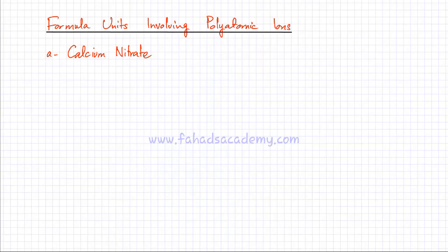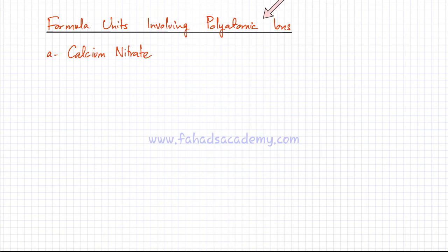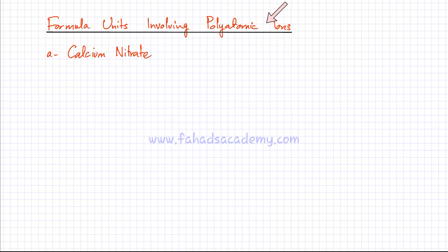In this video lecture, we're going to learn how to write formula units, but this time involving polyatomic ions. Polyatomic ions were the hydroxides, nitrates, sulfates, carbonates, etc. that we studied earlier. I told you to remember the name and the formula of these polyatomic ions. They're molecules that either gain or lose electrons and therefore have a net positive or negative charge.